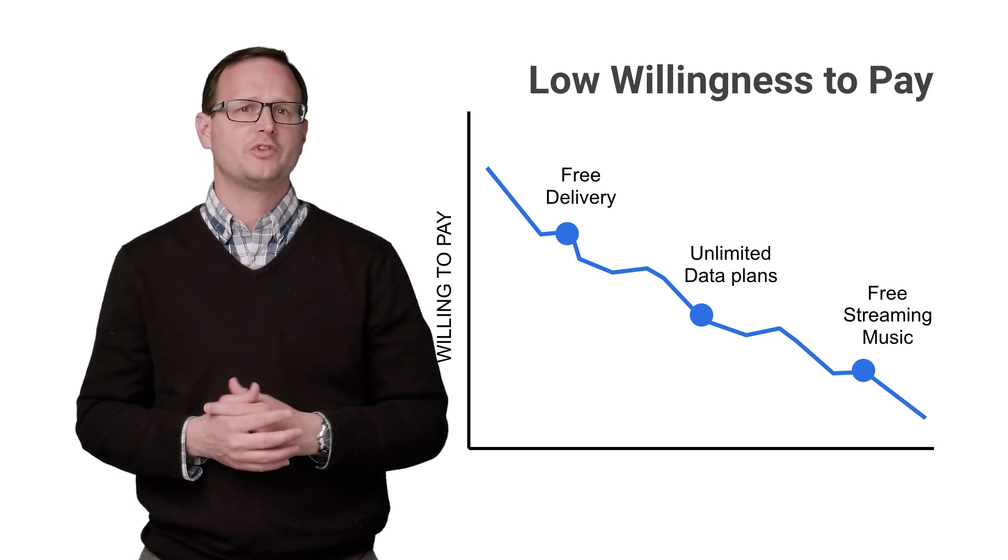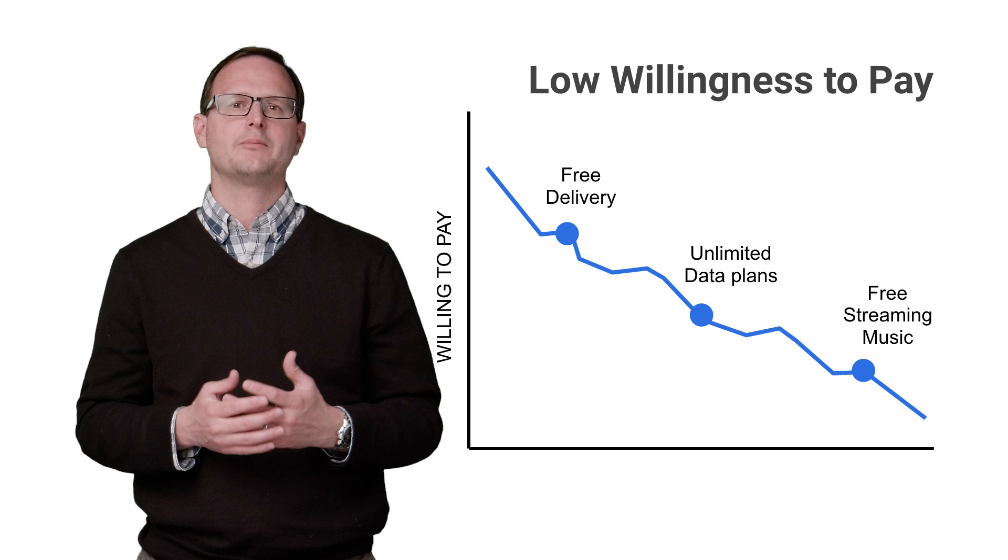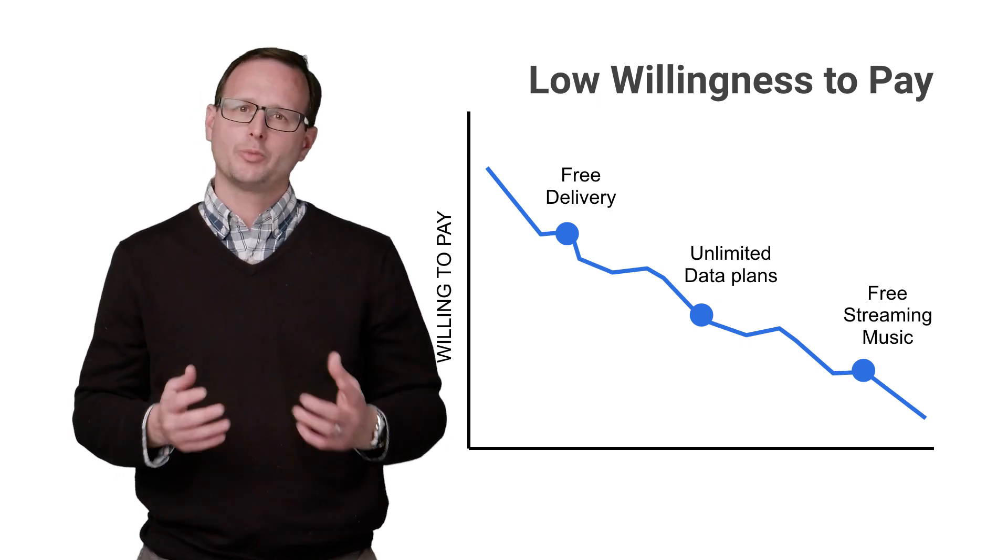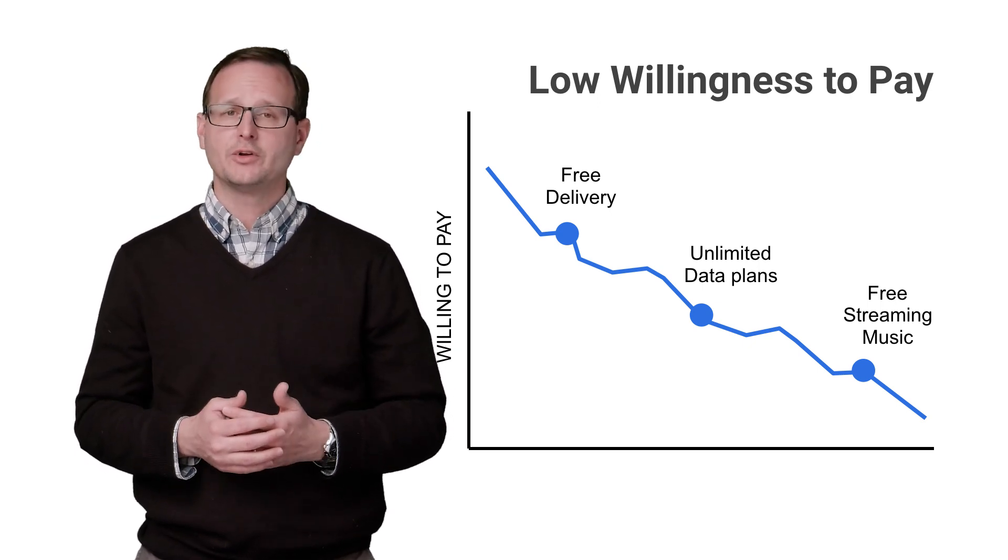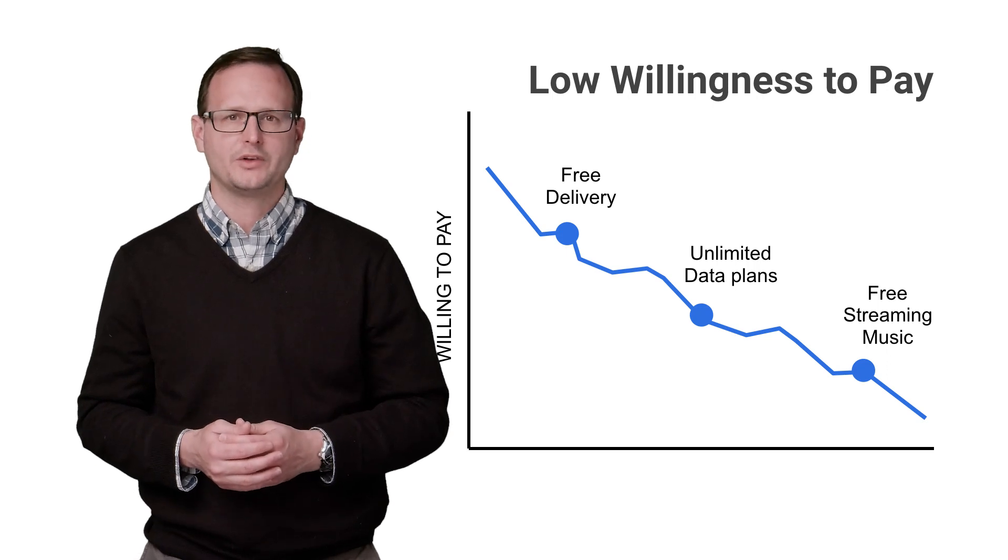For example, cheap fixed-priced physical deliveries soon became unlimited free delivery, and low prices for digital goods quickly evolved into unlimited plans for music, video, and mobile data.